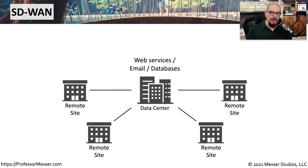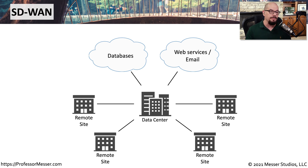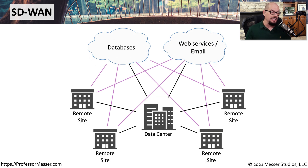Before cloud-based services and SD-WAN, we had a data center containing all our web services, email servers, and database servers, and all remote sites connected to it. With cloud-based services, email has moved to the cloud, web servers are at a cloud provider, and databases are at yet another cloud provider. Instead of remote sites communicating to a central data center and then hopping to cloud-based services, the wide area network automatically knows where to send data based on its type — a remote site needing cloud database access can go directly to the cloud, and a site needing email can communicate directly to that cloud email service.